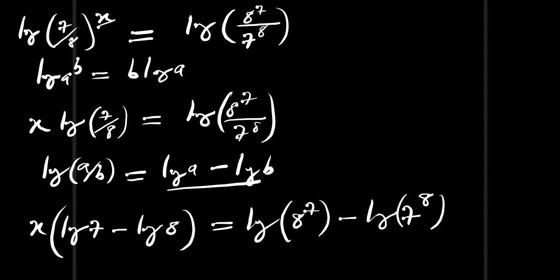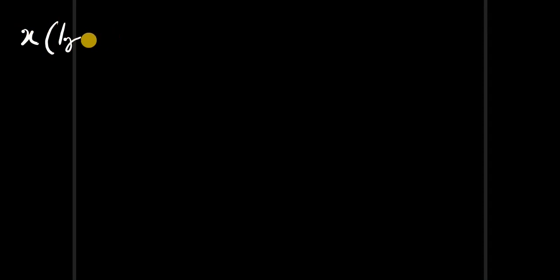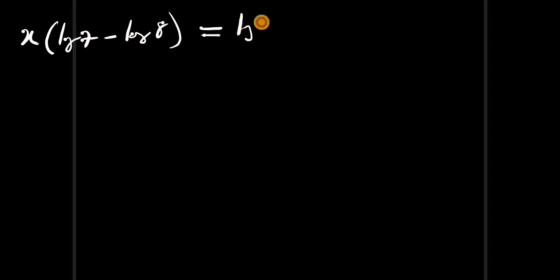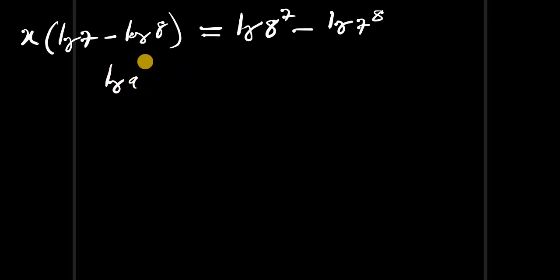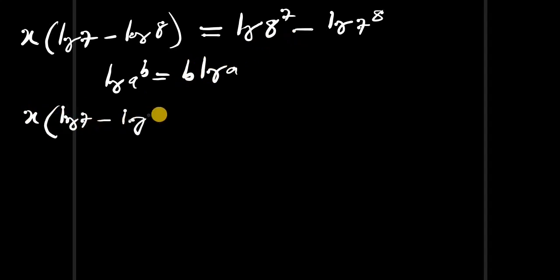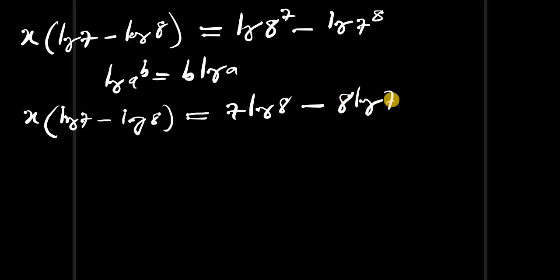Continuing on the next slide, we have x into log of 7 minus log of 8 equals log of 8 power 7 minus log of 7 power 8. Applying the identity log of a power b equals b times log a, the right side becomes 7 times log of 8 minus 8 times log of 7.